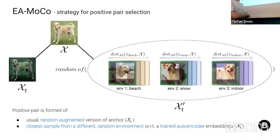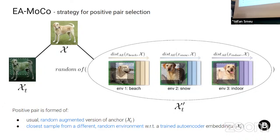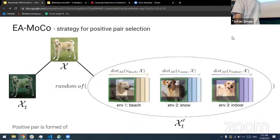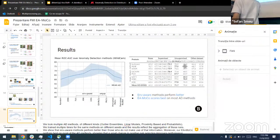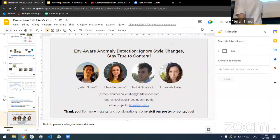One thought we had for positive pair selection was to take the same image, artificially change the background, and use that as the positive sample, which should have cleaner features of the label. That wraps up the presentation — thank you.